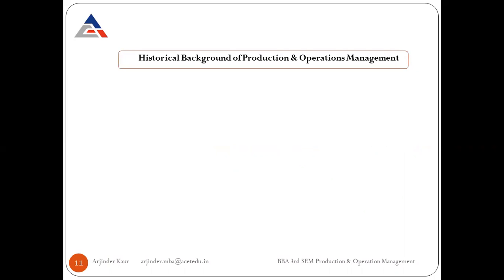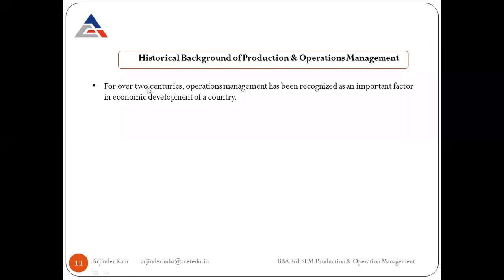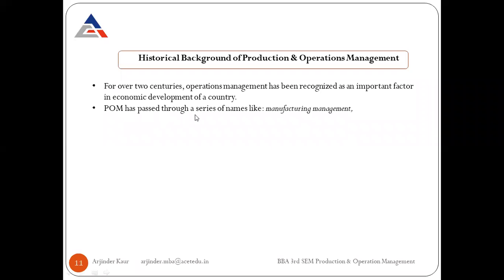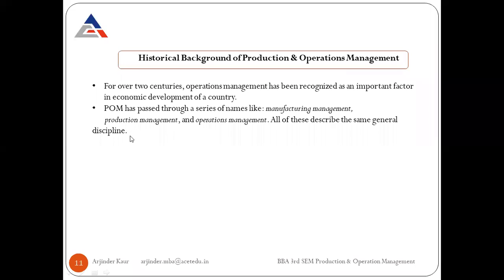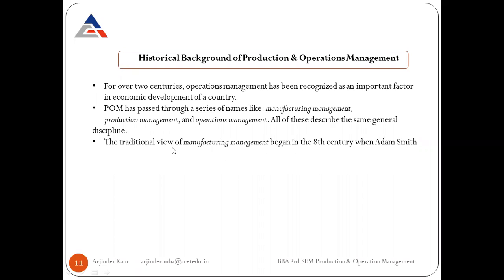The historical background of production and operations management shows that for over two centuries, operations management has been recognized as an important factor in economic development. The field has passed through a series of names — manufacturing management, production management, and operations management — all describing the same general discipline. The difference between production management and operations management will be elaborated on.